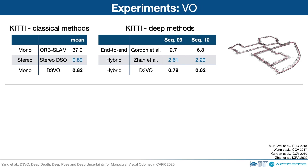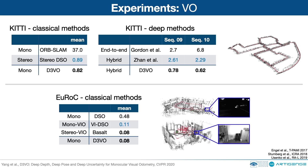Next, we show the evaluation results of visual odometry on the KITTI dataset. D3VO can deliver comparable results to state-of-the-art stereo methods despite being a monocular method, and can also outperform other deep learning-based methods with large margins. We then evaluate D3VO on the EuRoC dataset. The results show that D3VO can deliver comparable results to state-of-the-art monocular inertial and stereo inertial methods while using only a single camera.